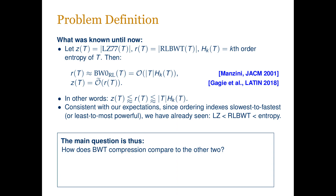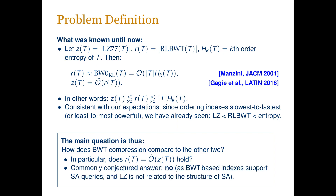This fact is consistent with our expectations, since if we order the indexes from least to most powerful we get the same ordering: the least powerful and slowest are the indexes based on LZ compression, and the most powerful are the ones achieving entropy bounds. The main question that remains is how BWT compression compares to the other two. We are particularly interested in whether BWT compression is provably close to LZ compression, as observed in practice. The commonly conjectured answer was no — the argument being that BWT-based indexes can support suffix array queries, while Lempel-Ziv compression is not related to the structure of the suffix array.